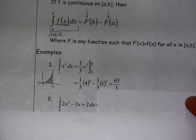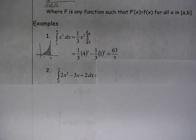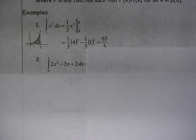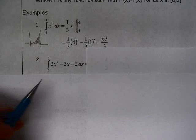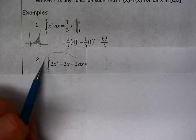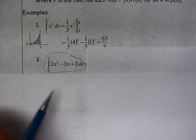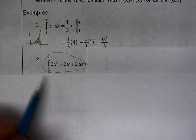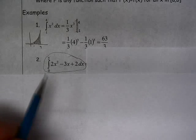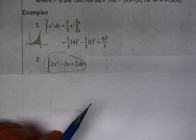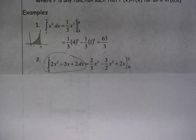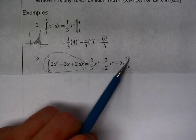The next example is the definite integral between 0 and 2 of 2x squared minus 3x plus 2. So again, keep in mind what we're trying to find here is the area between this graph and the x-axis, between x equals 0 and x equals 2. So again, we find the antiderivative of each of these terms evaluated from 0 to 2.